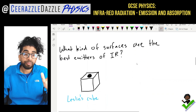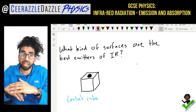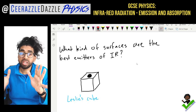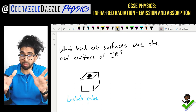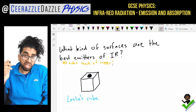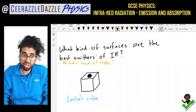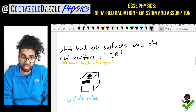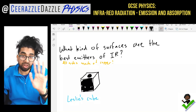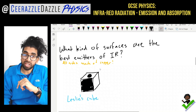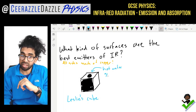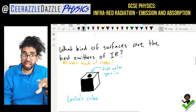The next thing we're going to talk about is what kinds of surfaces are the best emitters of infrared radiation. The best way of exploring this is using a device called Leslie's cube. Imagine a square teapot — all sides made of copper, but then painted differently. One side is black, another white, another silver, leaving one spare. We put hot water inside and measure how much energy comes out of each side.